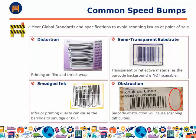It's very important that your barcode meets global standards in order to avoid issues at point of sale. The most common types of issues are: distortion, which is from printing on film or shrink wrap; smudged ink, which is a result of inferior printing quality; using semi-transparent substrates, which is a poor choice because the background is not scannable; and obstruction, where the barcode is less than 8mm from the packaging seal.